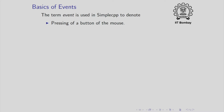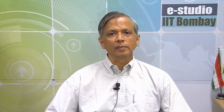The term event in simple CPP is used to denote a number of different things. For example, pressing a button of the mouse is an event, and releasing a button of the mouse is also an event. So when you press, it becomes one event, and when you release, it becomes another event. We can actually separate clicks into pressing a button and releasing a button. Moving the mouse after pressing a button is called dragging, and dragging a mouse is also an event.